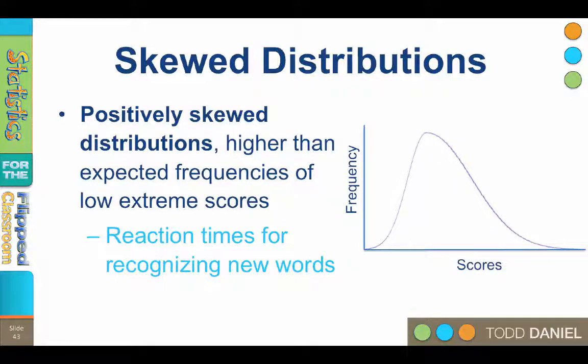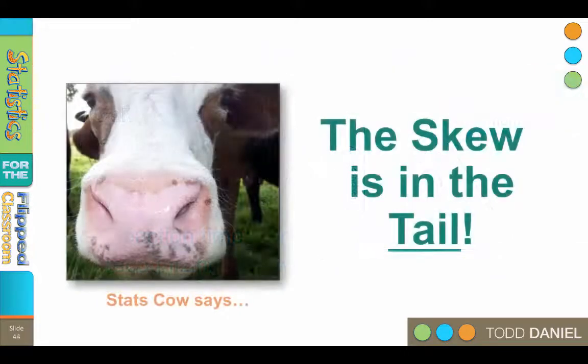Skewed distributions are not normal. How can you remember which direction is positive or negative when we talk about skewness? Stats Cow tells us that the skew is in the tail. Skewness is caused by outliers, extreme scores in the tail of the distribution. The direction that the tail is pulled out, positive or negative, is the direction of the skew.